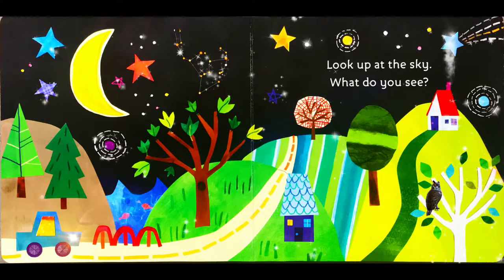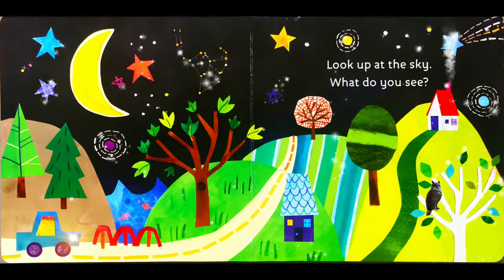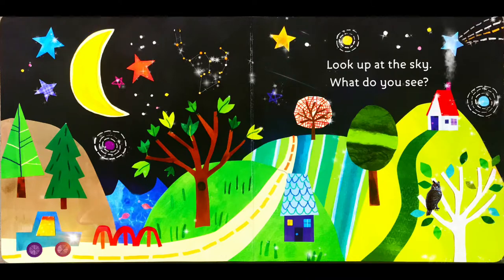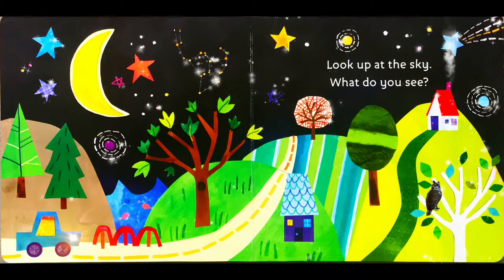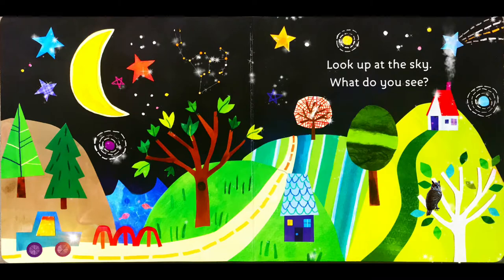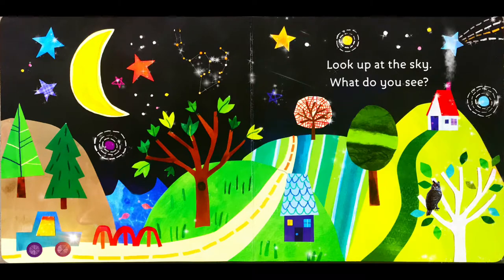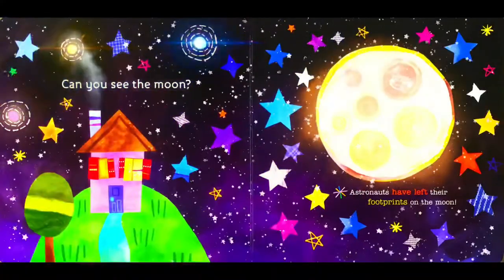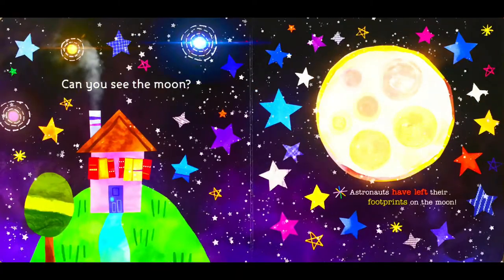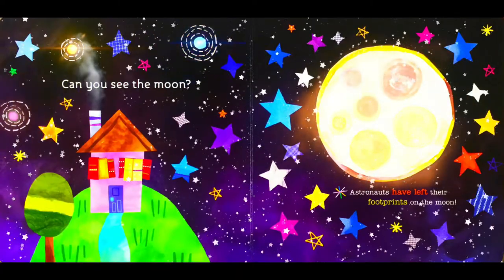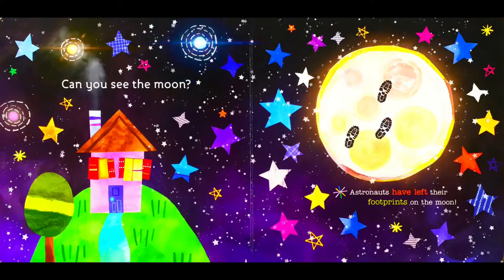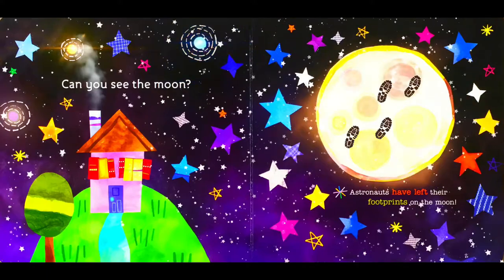I see the Orion constellation. I see the moon and I see a shooting star. Can you see the moon? Yeah, it's so shiny. Astronauts have left their footprints on the moon.